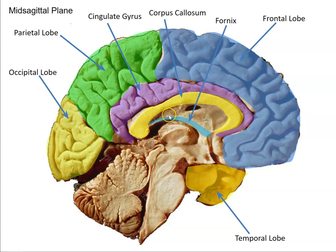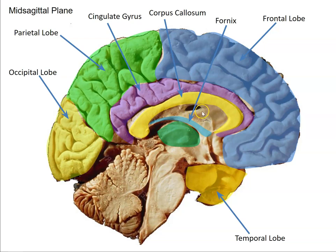Here is the fornix — a white matter tract that's essentially the midline of the hippocampus. The left and right hippocampus kind of meet in the middle as the fornix. Just ventral to that is the thalamus. There's a thin sheet of brain tissue called the septum pellucidum separating the left and right lateral ventricles — this hole is through the septum pellucidum into the lateral ventricle. The thalamus acts as a relay station for all of the senses except smell, which goes directly from the olfactory bulb and tract into the piriform cortex.